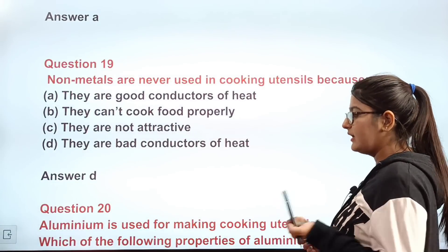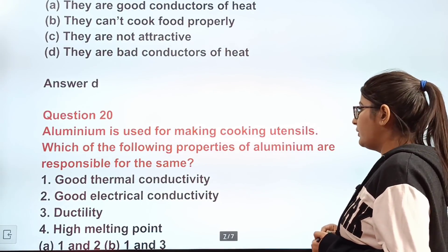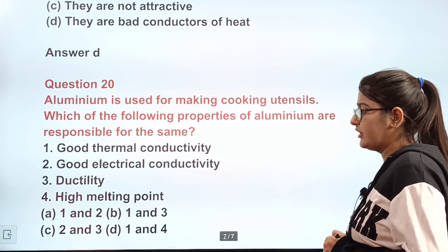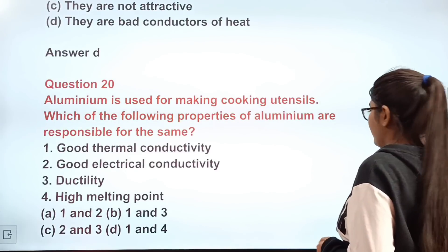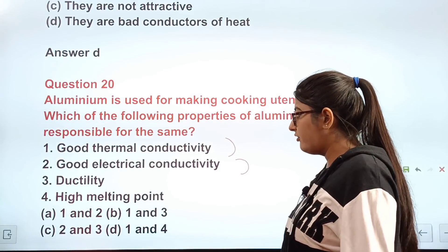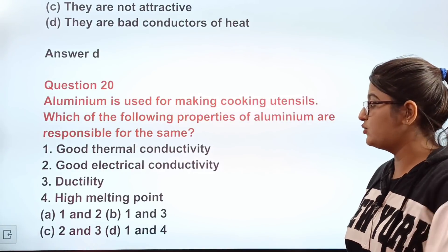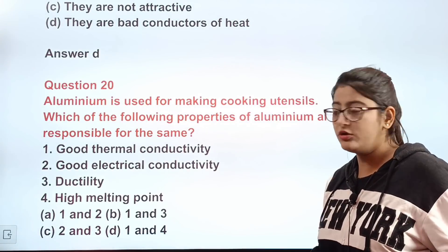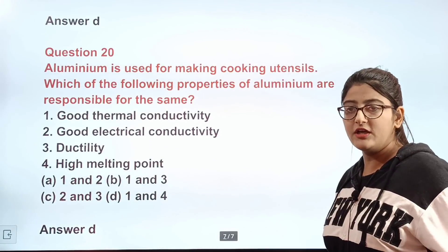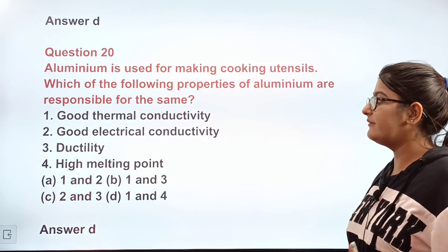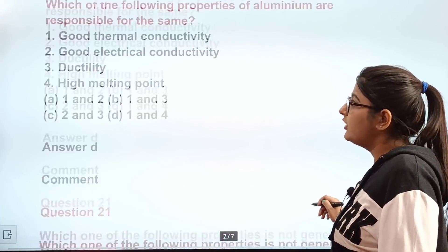Question number twenty: aluminium is used for making cooking utensils — which properties of aluminium are responsible for this? Options include good thermal conductivity, good electrical conductivity, ductility, and high melting point. For cooking we need thermal conductivity and high melting point, not electrical conductivity. The correct answer is D — good thermal conductivity and high melting point.